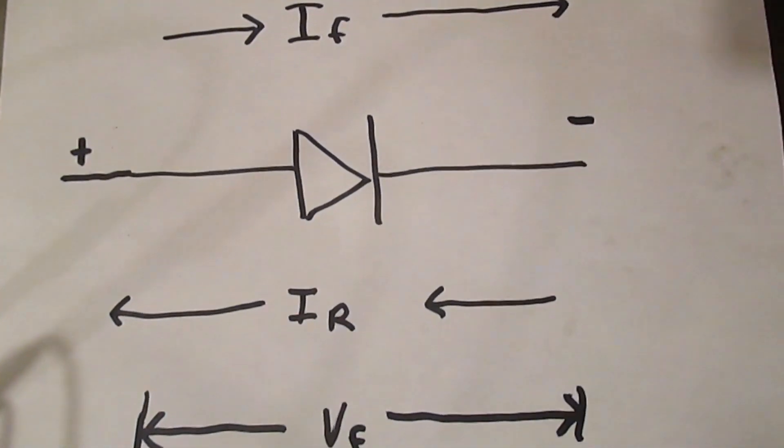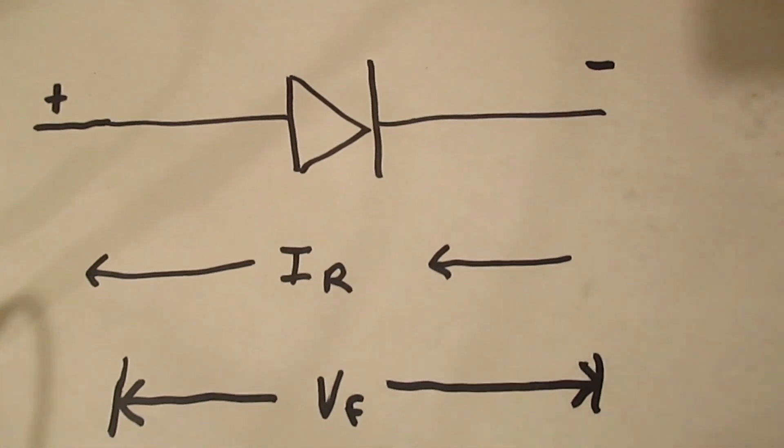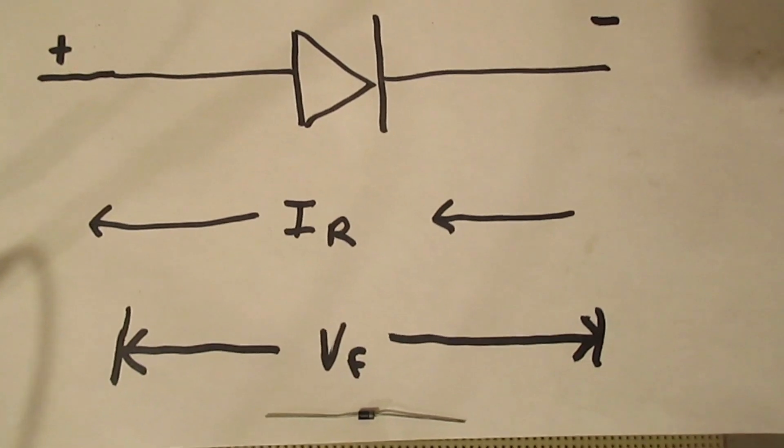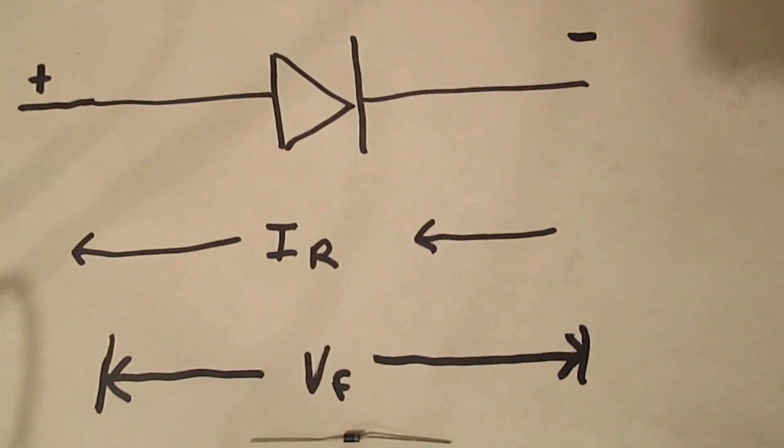But when reverse biased there is a leakage current flowing back, typically in microamps. That leakage current is proportional to temperature.